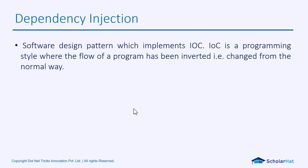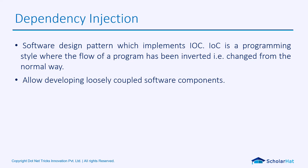But in Dependency Injection, it will not create the class B object — it will receive it whenever it is available. This third style comes under IoC, where the normal flow of the program is inverted and changed. The objective of Dependency Injection is to make loosely coupled software components.